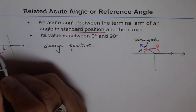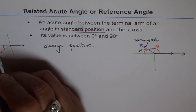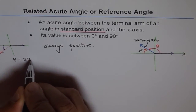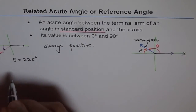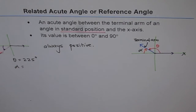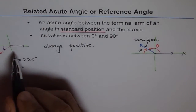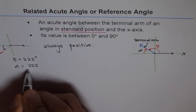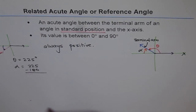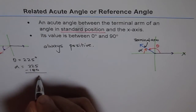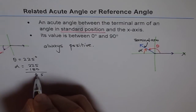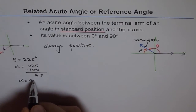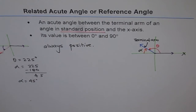Let's say this angle here is 225 degrees. If theta equals 225 degrees, then what is alpha, the related acute angle? The related acute angle is how much more it is from 180 degrees. So it will be 225 minus 180 degrees, which gives us 45 degrees. So if theta is 225 degrees, then alpha is 45 degrees — that is the related acute angle.